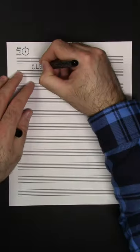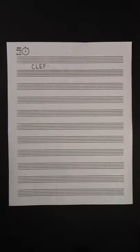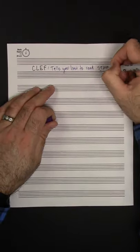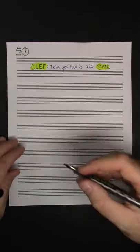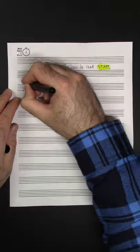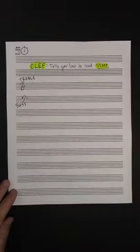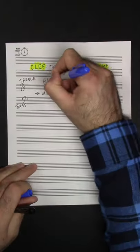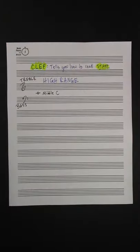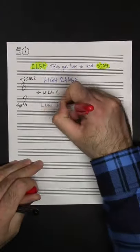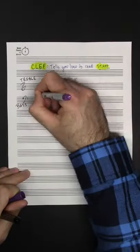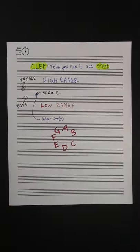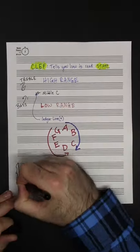If your instrument generally plays above middle C, you use a staff with a treble clef. If your instrument generally plays below middle C, you use a staff with a bass clef. If your instrument spans well below and above middle C, like a piano, you might use both treble and bass clefs.